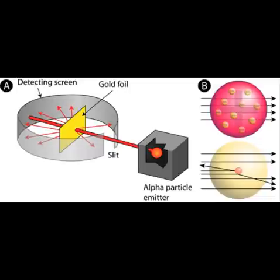But in his gold foil experiment, most of the beams went through the foil while a few were deflected. The part at which the beams were deflected he called the nucleus, because that part was a very heavy, rigid structure.